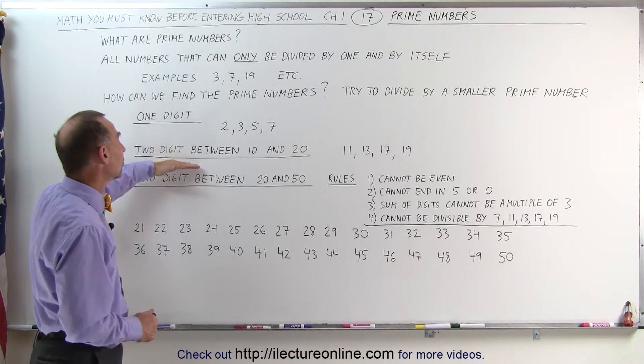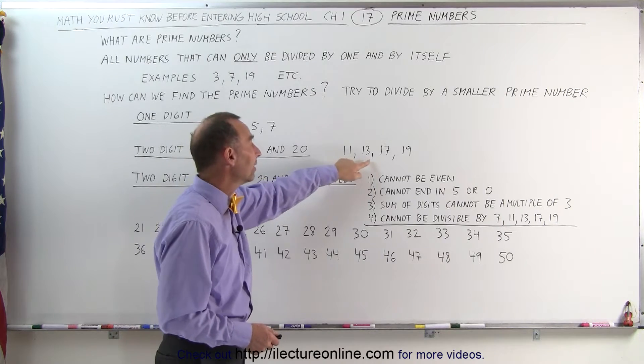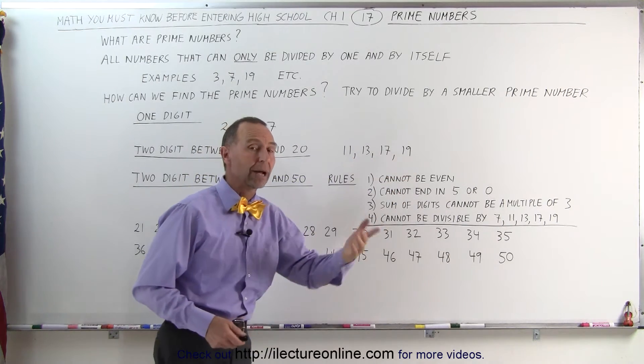For the two-digit numbers between 10 and 20, we can memorize that the numbers 11, 13, 17 and 19 are prime numbers as well.